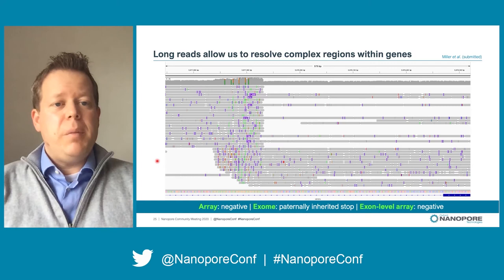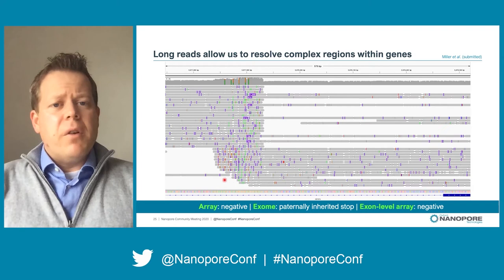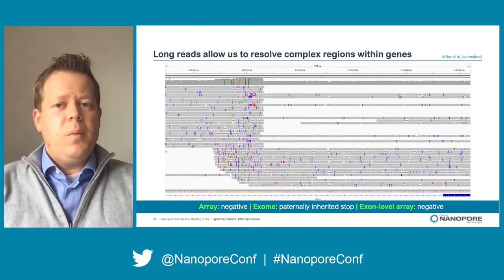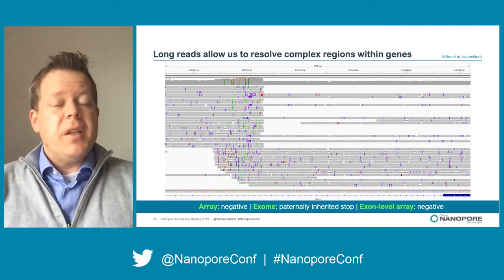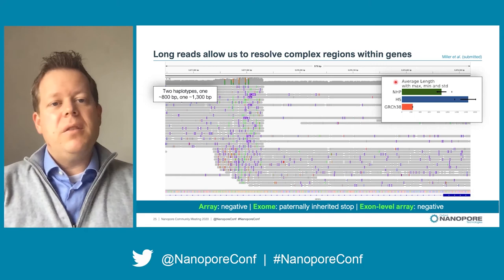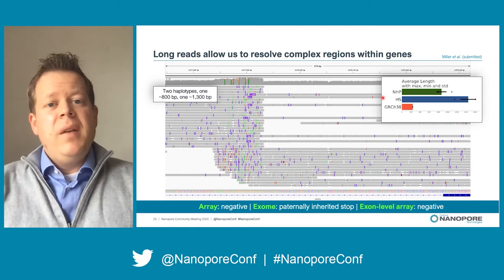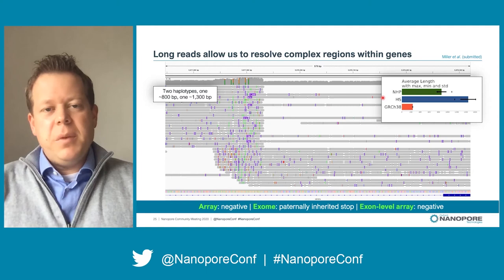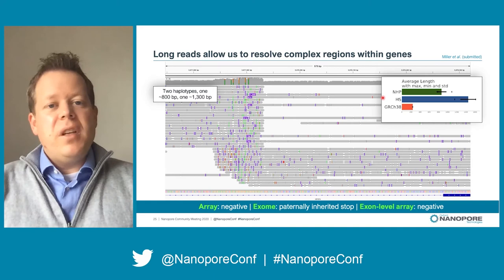With our structural variant calling we found a structural variant in the gene that's a nice example of the extra information long reads can provide. This is an IGV view of a repeat known to be polymorphic in humans — about 200 base pairs in the reference genome. Each gray bar is a read, with an exon on the right and an intron making up most of the view. Some reads span the repeat expansion, and those show two haplotypes present — one about 800 base pairs and one about 1300 base pairs. This lets us determine that both expansions fall within the range seen in non-human primates or human samples, making it unlikely — though not impossible — that something in this repeat represents the second hit. With short reads alone we wouldn't be able to definitively exclude this region, but with long reads we can do that with high confidence.